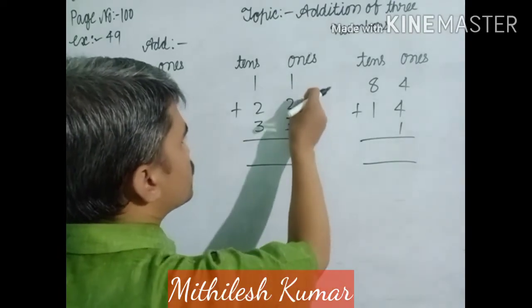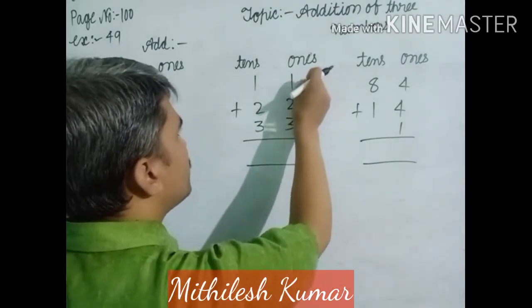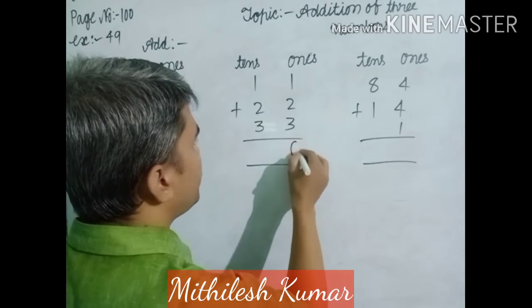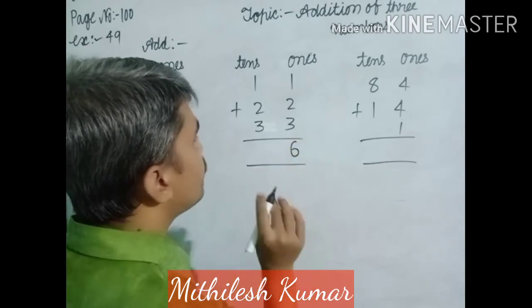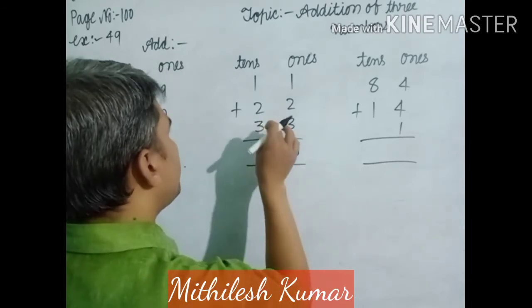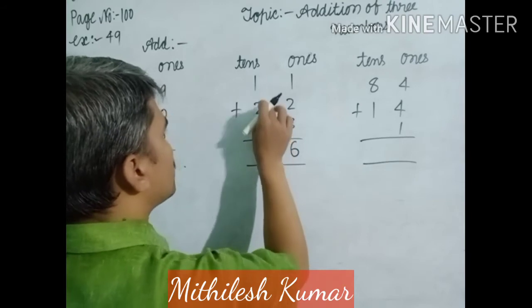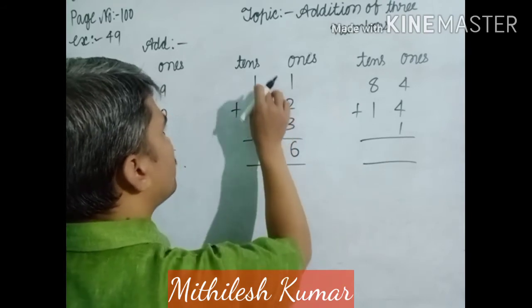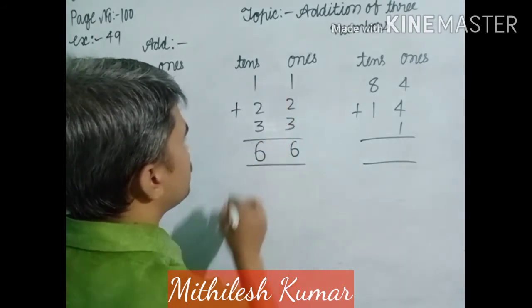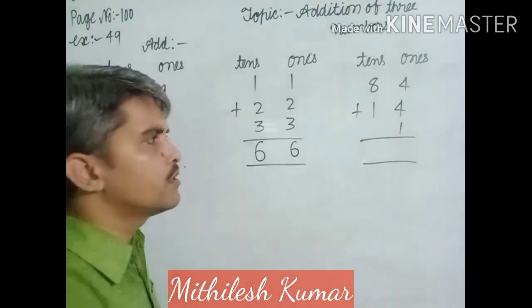In the 1s digit column: 3 plus 2 is 5, plus 1 is 6. You write here 6 in the proper way. And going to the 10s digit column: 3 plus 2 is 5, plus 1 is 6. Dear students, your answer is found: 66.